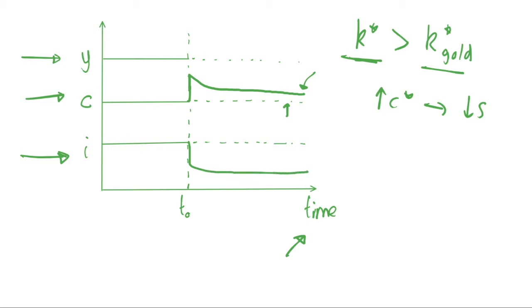Using the identity y = consumption + investment, our output per capita does decline slightly — it looks something like this — and we reach our new steady state levels in the long run, given by these new changed lines.